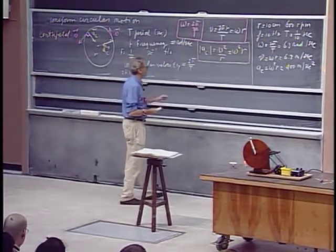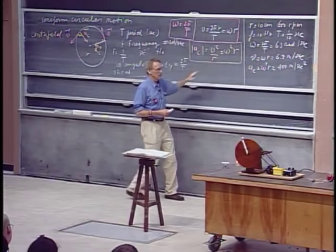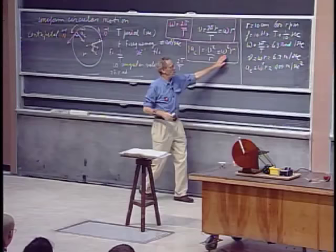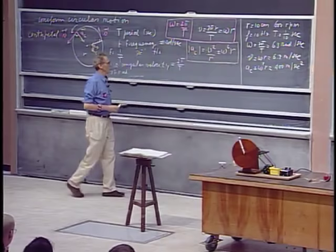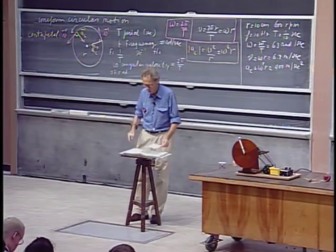Notice that the centripetal acceleration is linear in r — don't think it is inversely proportional with r. That is a mistake because v itself is a function of r. If you were sitting closer to the center, your velocity would be lower. Since omega is the same for the entire rotating object, the centripetal acceleration is proportional with r. Therefore, if this were a rotating disk and you were at the center, the centripetal acceleration would be zero, increasing as you move outward.